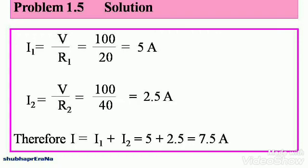We know that I1 is equal to V divided by R1. This is Ohm's law, and we know the voltage is the same across a parallel circuit. So I1 becomes 100 divided by 20, which gives you 5 amps. And I2 similarly is V divided by R2, which is 100 divided by 40, and that gives you 2.5 amps.